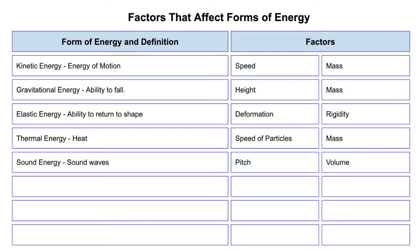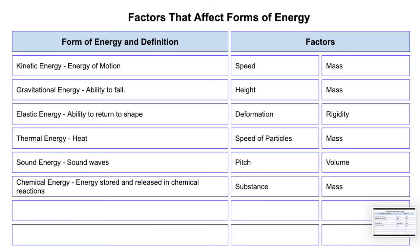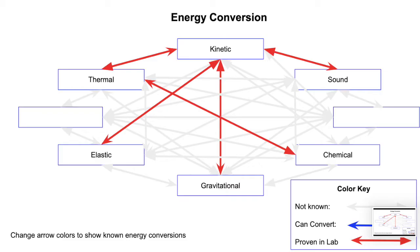After completing this lab, we should take the time to add what we've learned to our scientific principles page. Chemical energy is energy stored in the bonds of molecules and released during chemical reactions. The factors that affect it are the substances being reacted and the mass of those substances. We will also want to add chemical energy to our conversion chart and then find the arrow leading from chemical energy to thermal energy and color it red so that we can show that in the lab we have converted chemical energy to thermal energy.